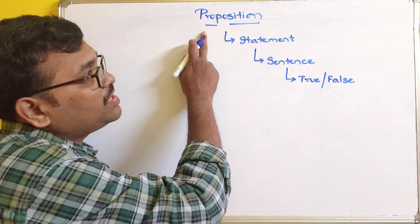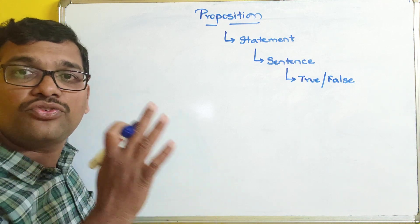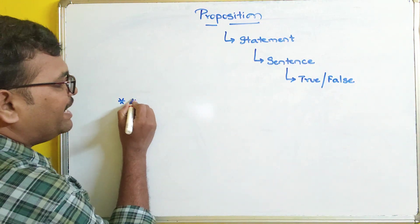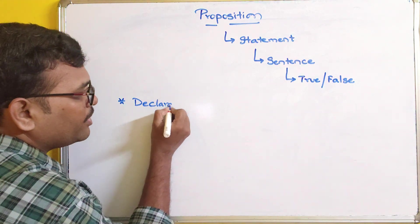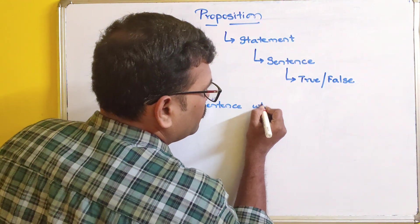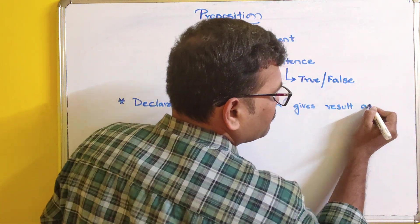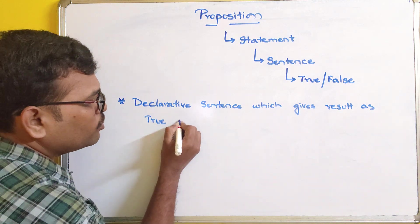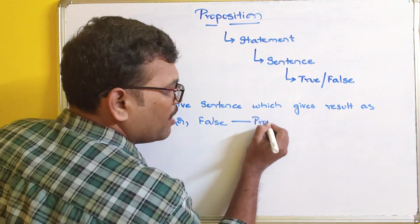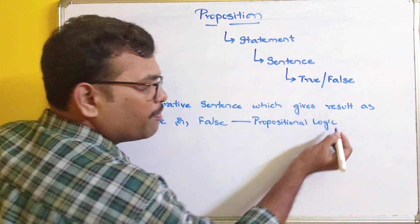So the propositional statement means it is a declarative sentence which gives either true or false, but not both. So we can write the definition here: a declarative sentence which gives a result as true or false is called as propositional logic or propositional statement.